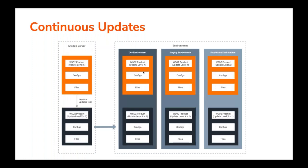This diagram gives you an understanding of how updates are shipped to environments managed by Ansible. There are three environments: dev, staging, and production. All the managed nodes are synced with the Ansible server. As you can see, the Ansible server has update level X and the dev environment has the same update level, and staging and production likewise. To update all environments in your deployment, you need to run a script provided with the WSO2 Ansible resources to update your product to update level X+1, and then ship them to your environments.